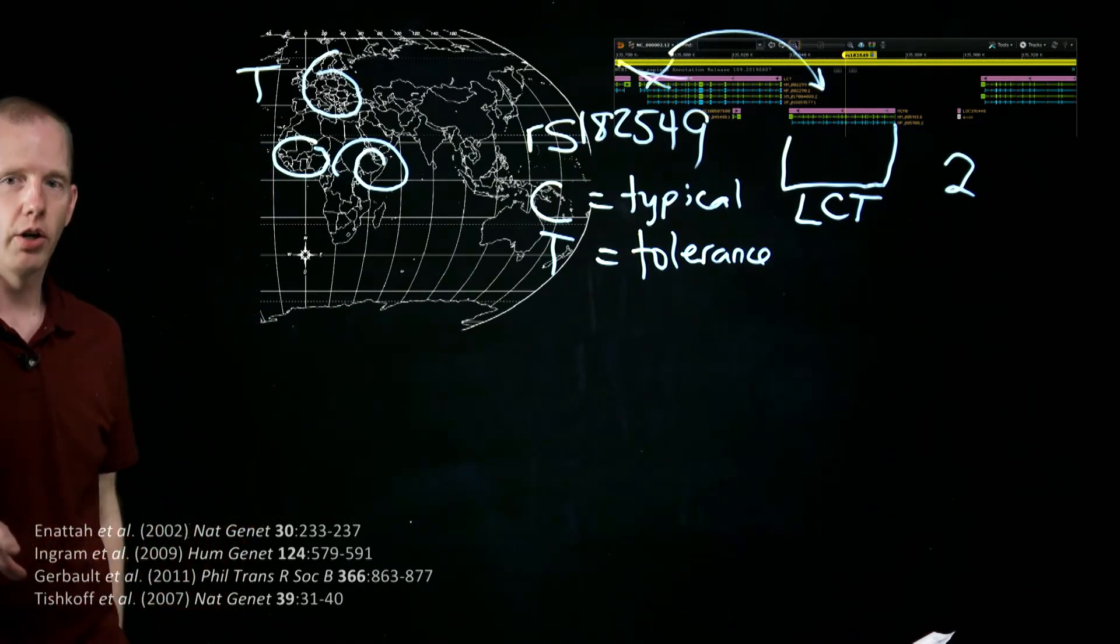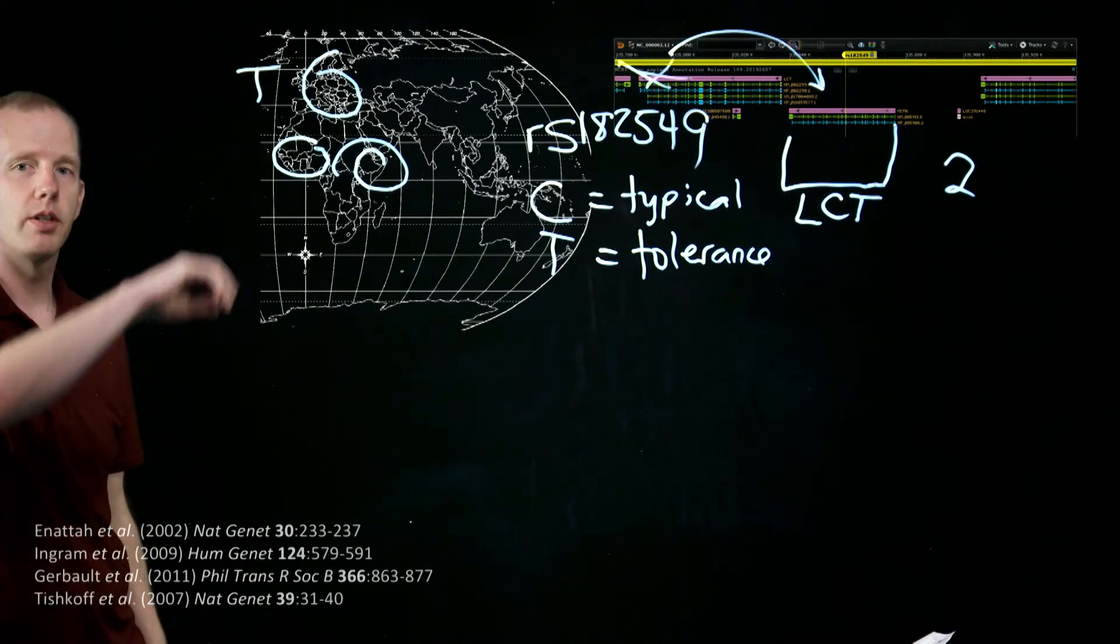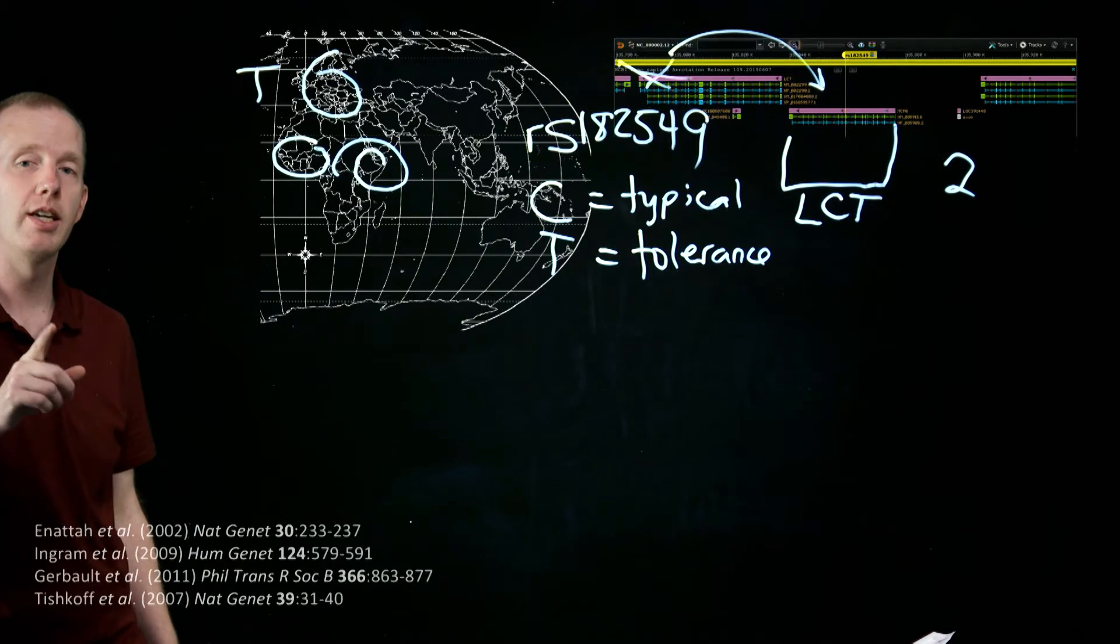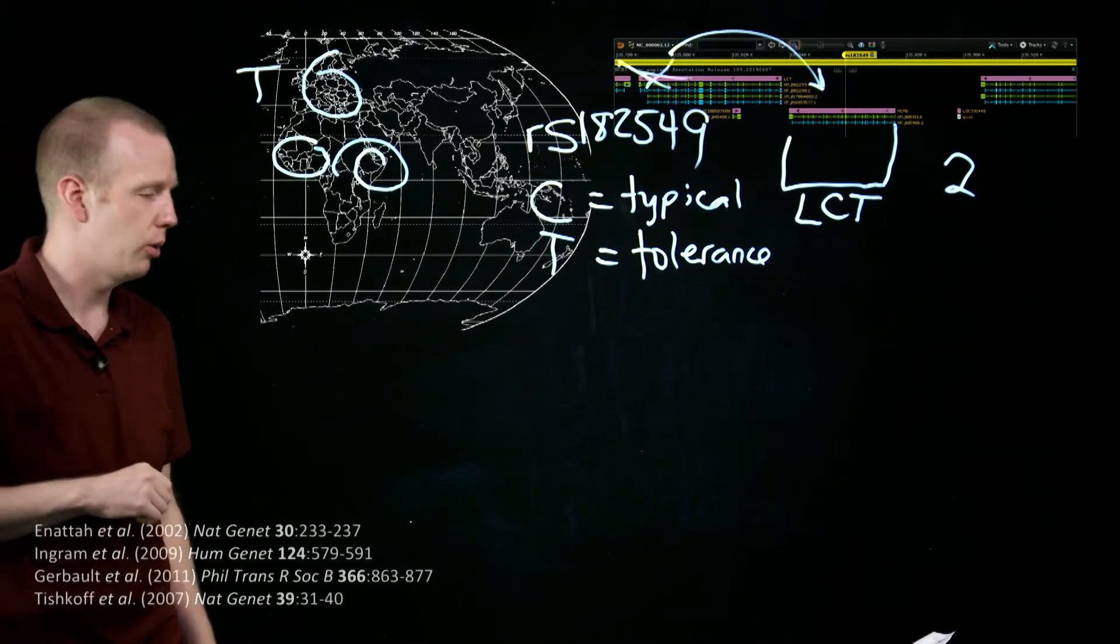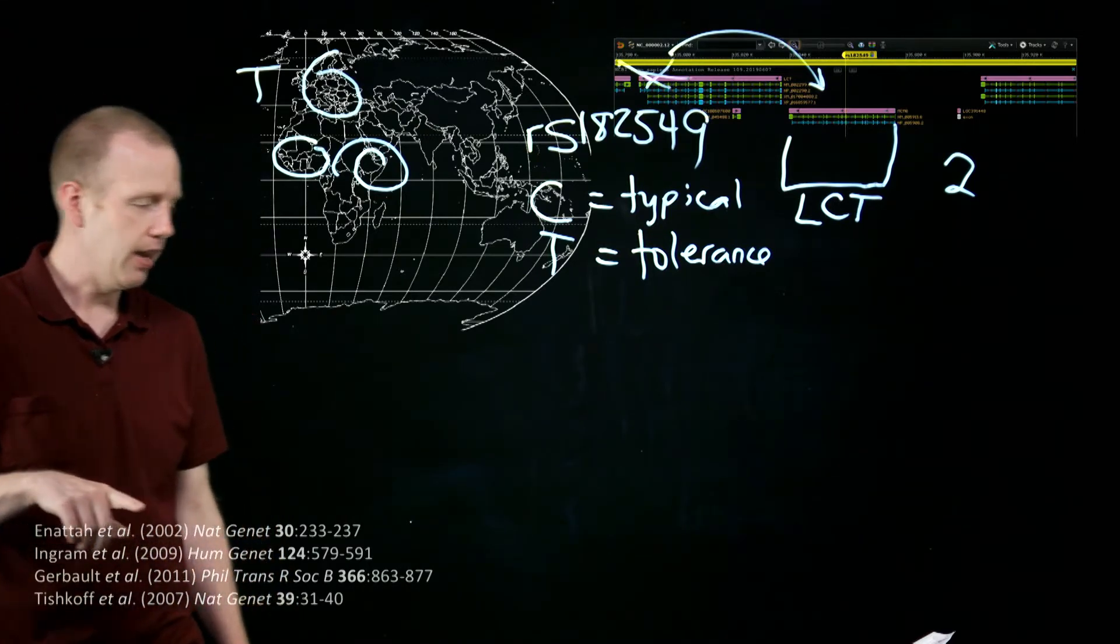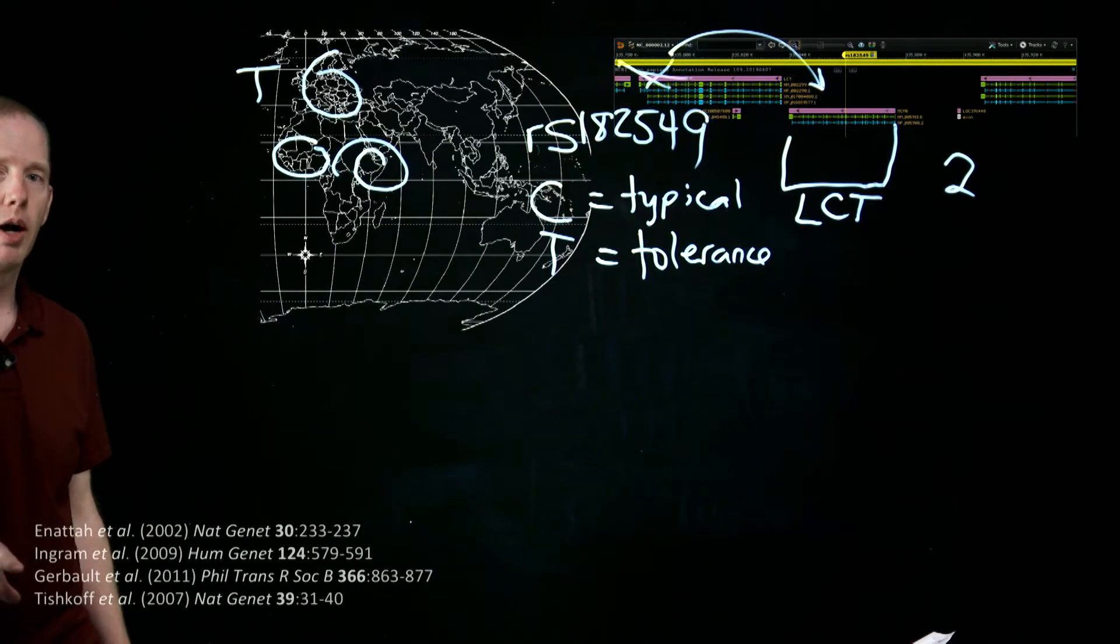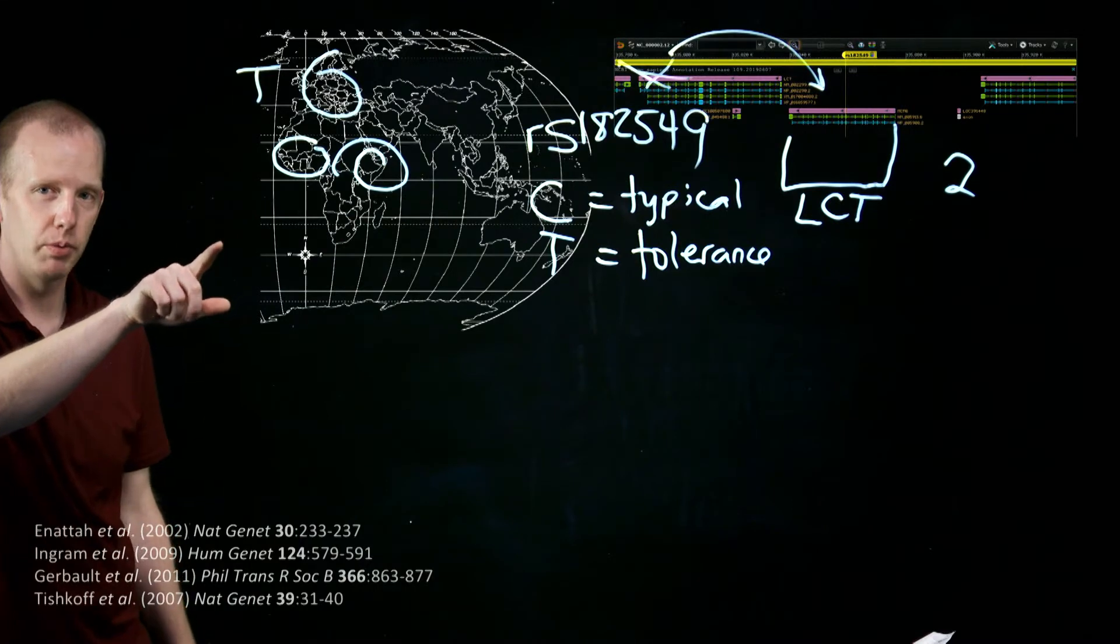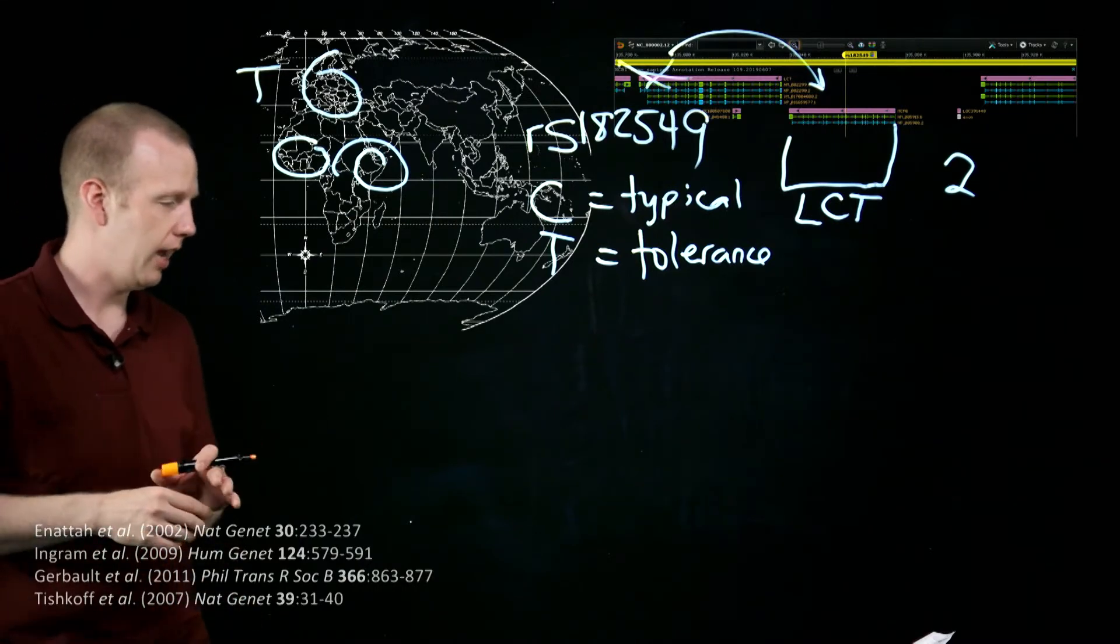The Ingram et al. article is the one that showed that there was the T mutation associated with lactose tolerance, particularly in Northern Europe, Scandinavia, and the British Isles. And the third reference here, Gabalt et al., is the one that showed the persistence of lactase in these three separate groups, but not looking necessarily at the genetics.